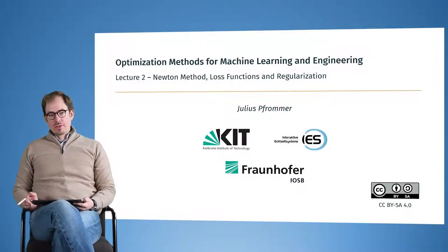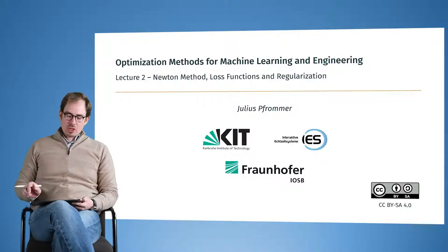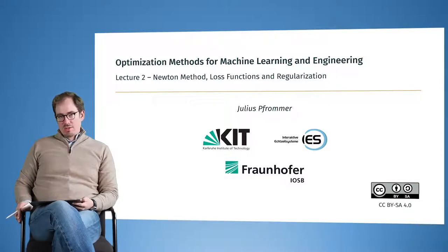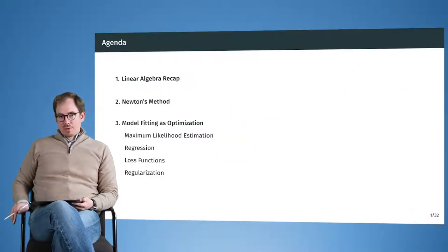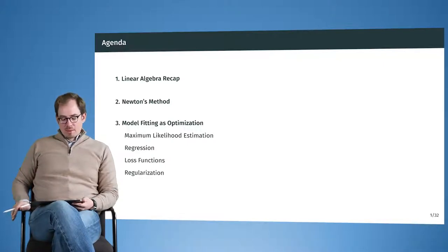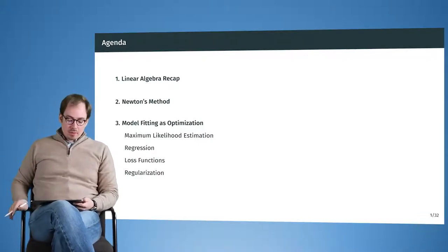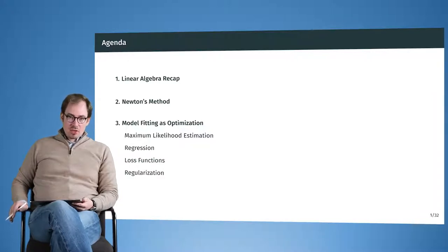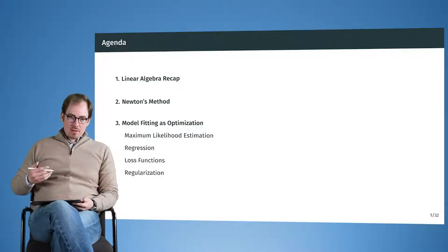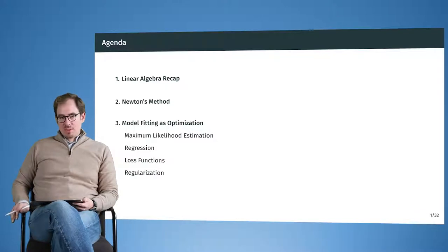Welcome to the second lecture of the course Optimization Methods for Machine Learning and Engineering. Today's lecture is on the Newton Method, Loss Functions and Regularization. The topics for today include a repetition of basic linear algebra concepts, Newton's method in detail — which will give great speed improvement compared to gradient descent — and model fitting as optimization, including how to fit probability distributions in an uncertain environment.